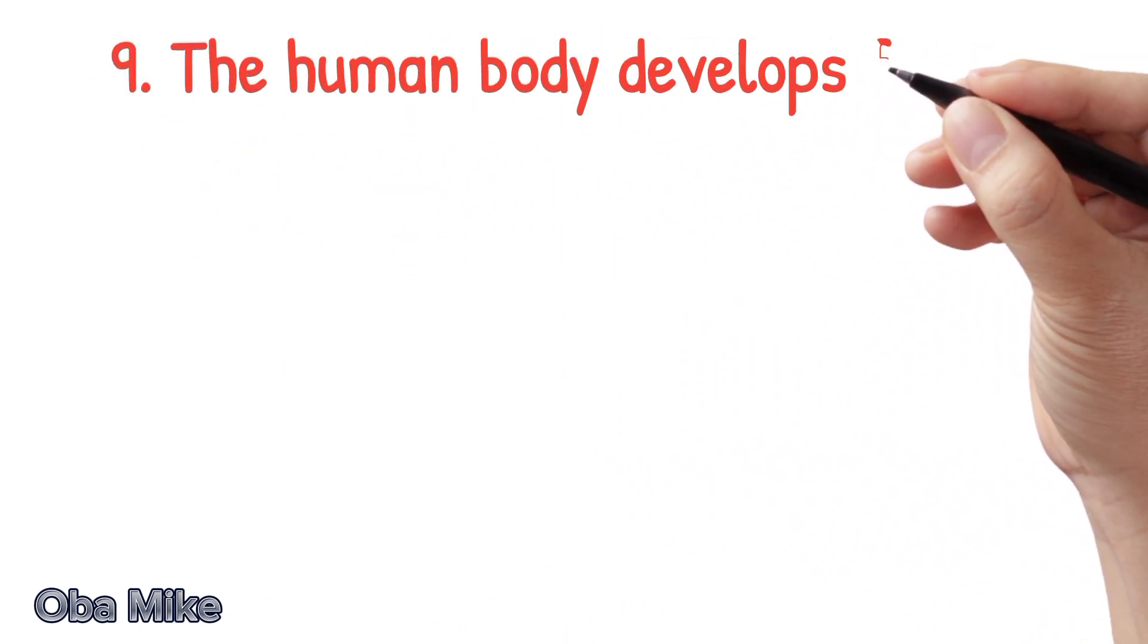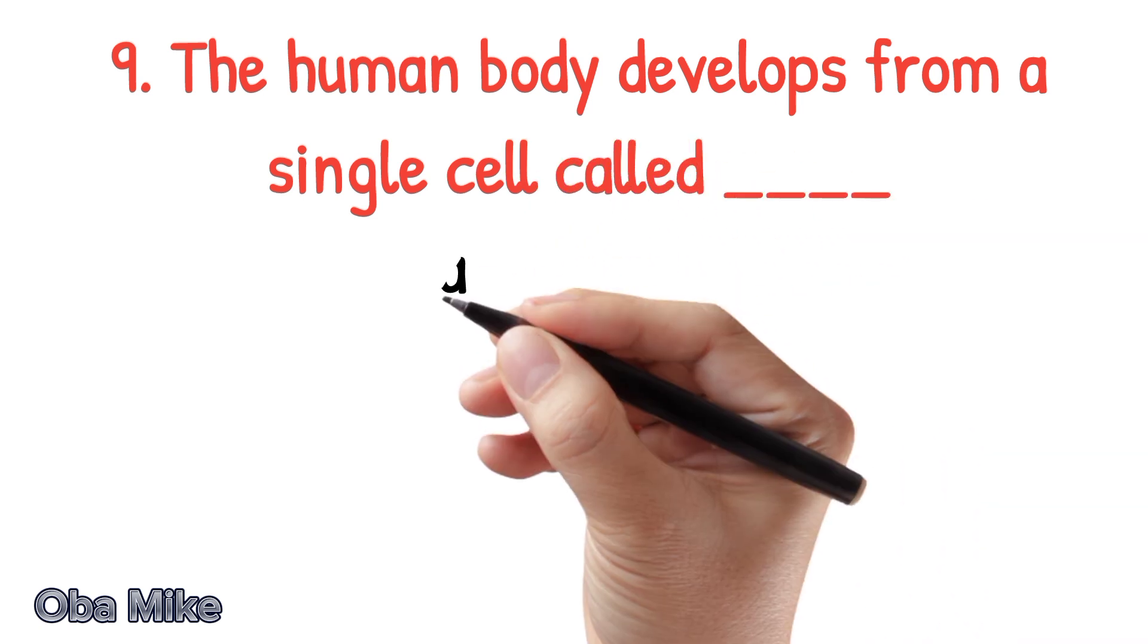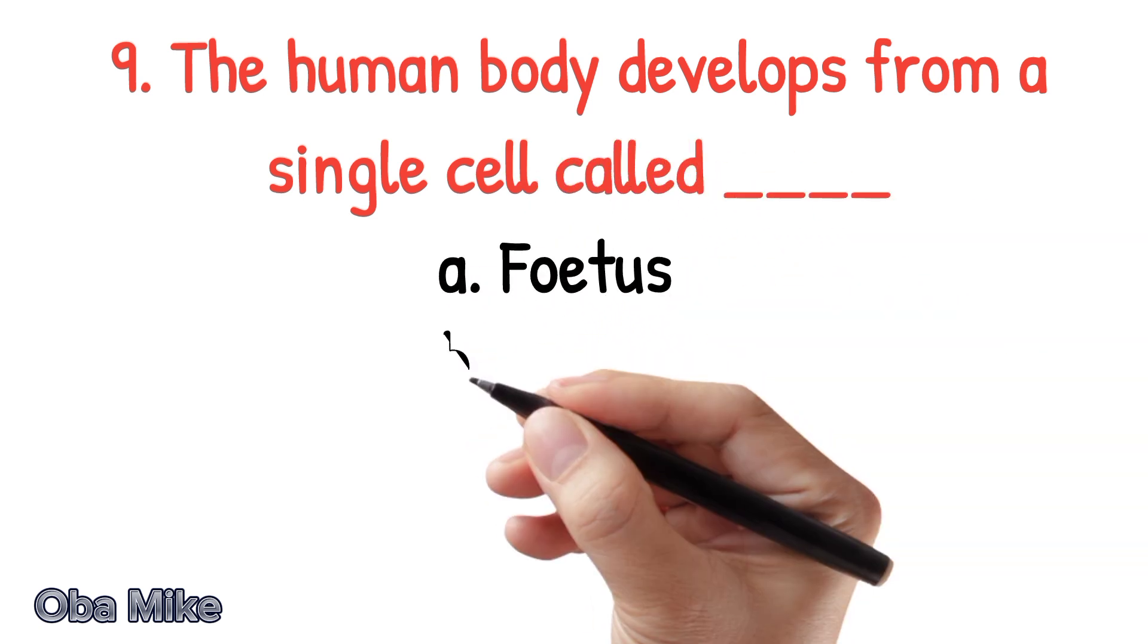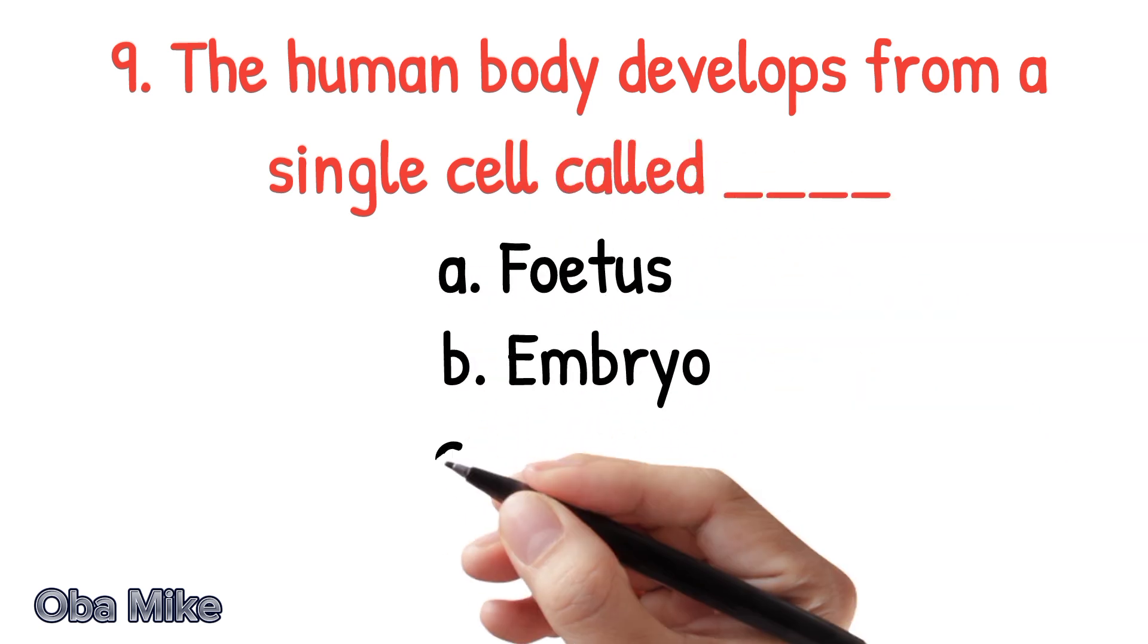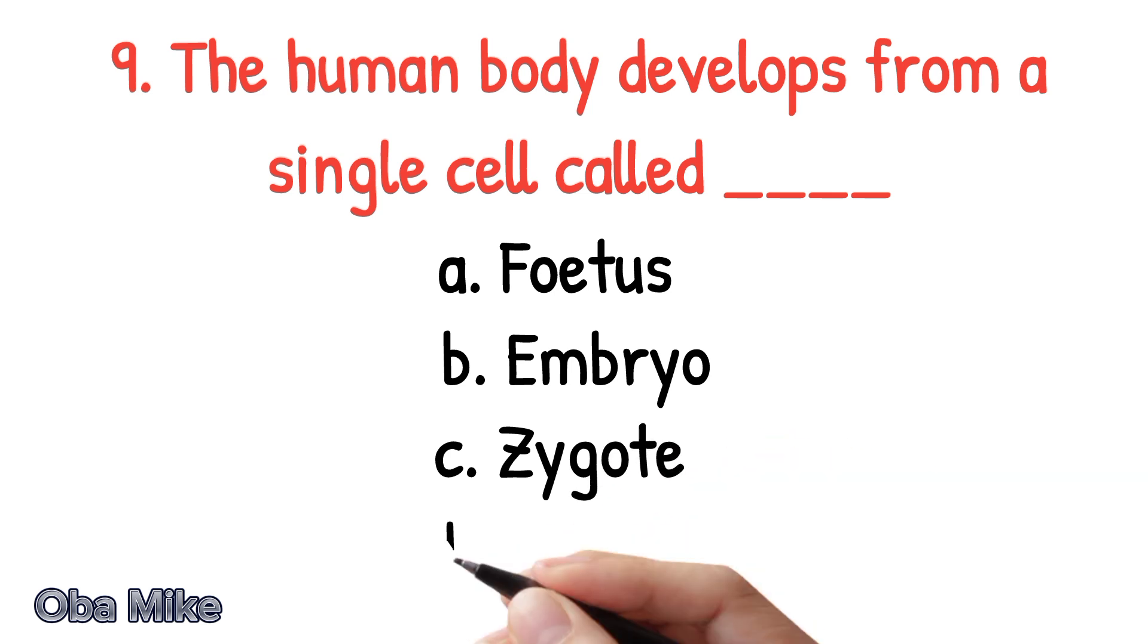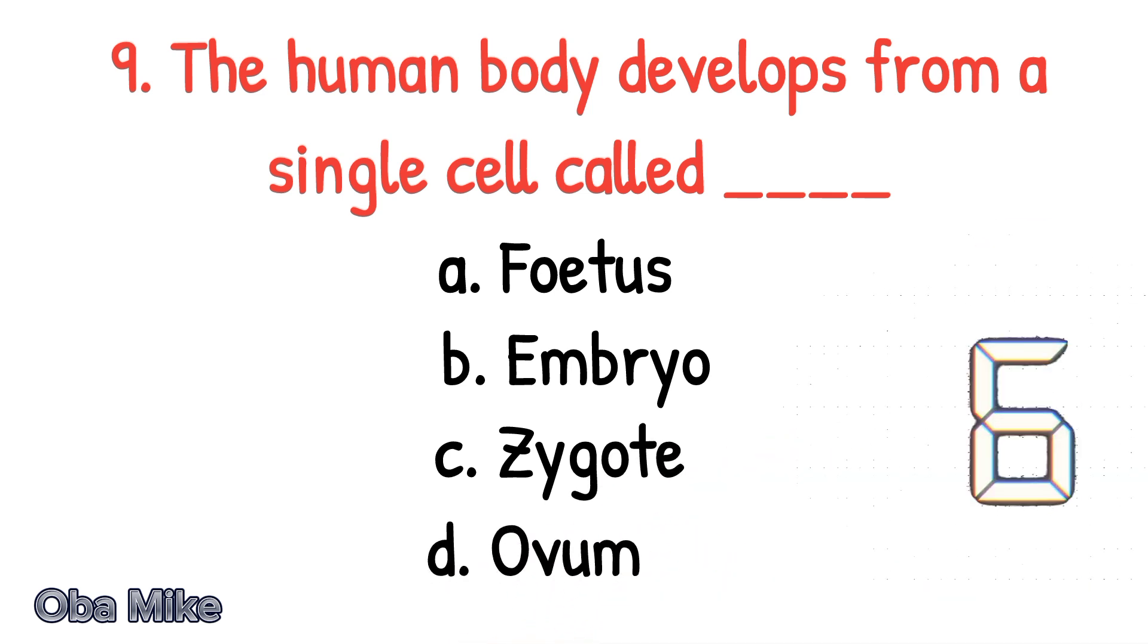Number 9. The human body develops from a single cell called dash. A. Fetus, B. Embryo, C. Zygote, D. Ovum. The correct answer is C. Zygote.